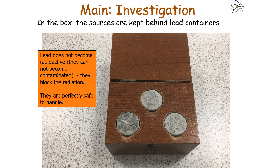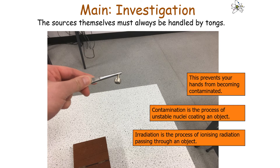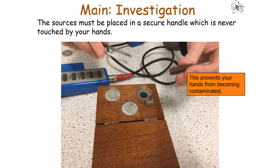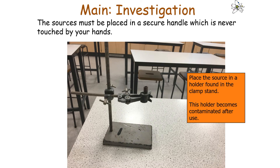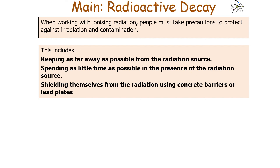Radioactive sources are kept in lead-lined boxes to prevent alpha and beta from leaving the box and to reduce the amount of gamma radiation escaping. The lead does not become radioactive itself — it simply blocks the radiation. Sources should always be handled with tongs to prevent hands from becoming contaminated. Contamination is the process of unstable nuclei coating an object, which is different from irradiation — the process of ionising radiation passing through an object. Contamination is more dangerous than irradiation because it leads to long-term irradiation and removes the distance factor. Precautions include keeping as far away as possible, spending as little time near the source as possible, and shielding with concrete barriers or lead plates.